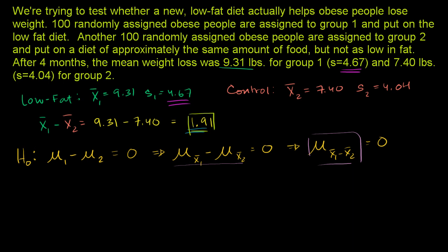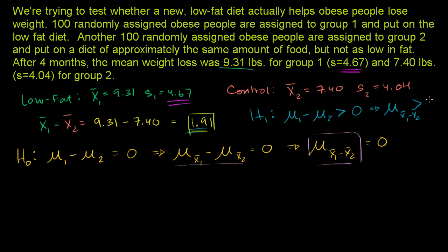Our alternative hypothesis is that the diet actually does do something — specifically, that it has an improvement. That would mean more weight loss, so the population mean of group 1 minus the population mean of group 2 should be greater than 0. This is going to be a one-tailed test. Equivalently, the mean of the difference of the distributions, x1 minus x2, is going to be greater than 0.